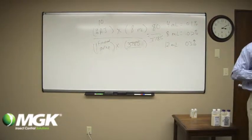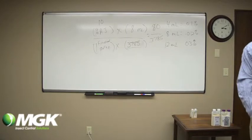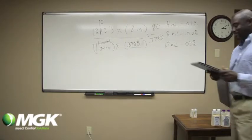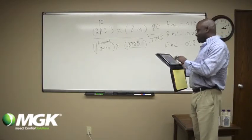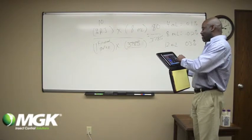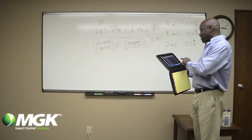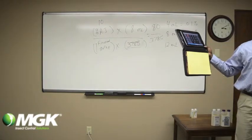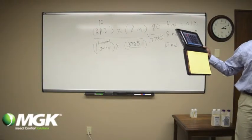And we're going to divide 80 by 3,785 and see what we come up with. So 80 divided by 3,785 gives you 0.02%.